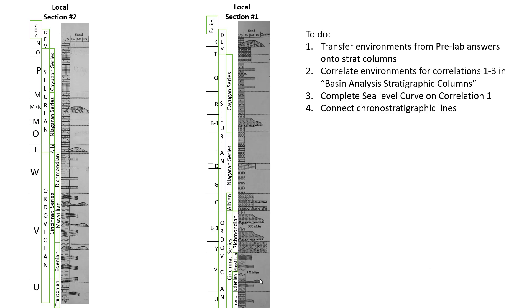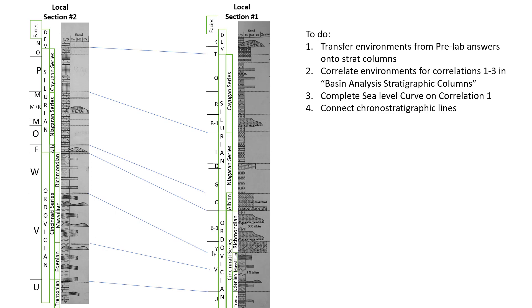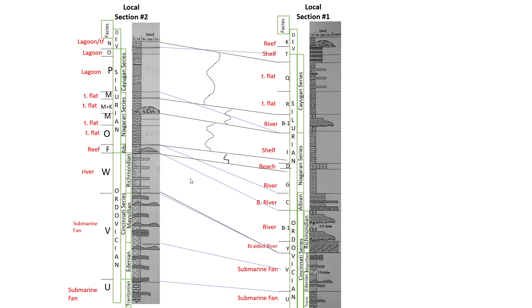Chronostratigraphic lines connect points that are the same in time across our locations. For example, where the Trentonian stage ends in the Ordovician at location 1 connects to where the Trentonian stage ends at location 2. Similarly, the end of the Edenian connects across, and the end of the Mayvillian connects across. This only takes about two minutes. If you do environments and time on the same slides, make your chronostratigraphic lines a different color because they will cross — that's fine, since they're correlating different things.